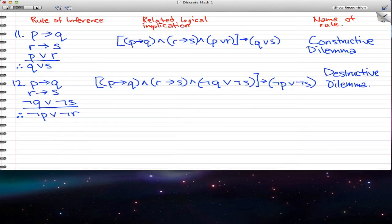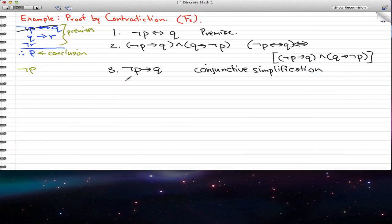Going back to where we were, we just applied conjunctive simplification to step 2. Now, in step 4, we're going to use another one of our premises, which is q implies r. And this would just be a premise.